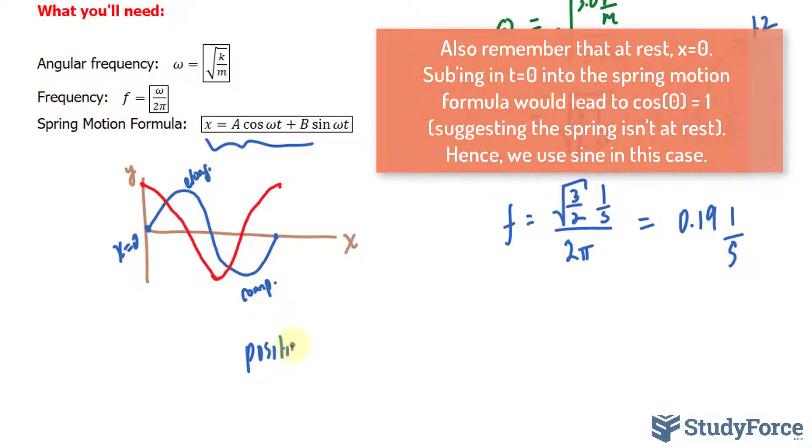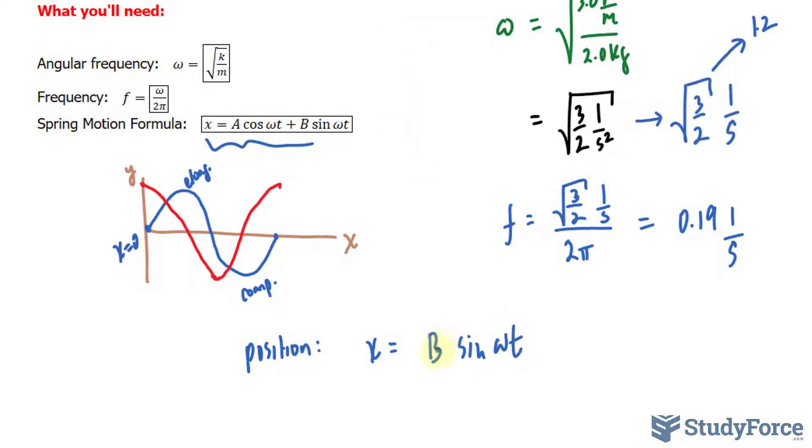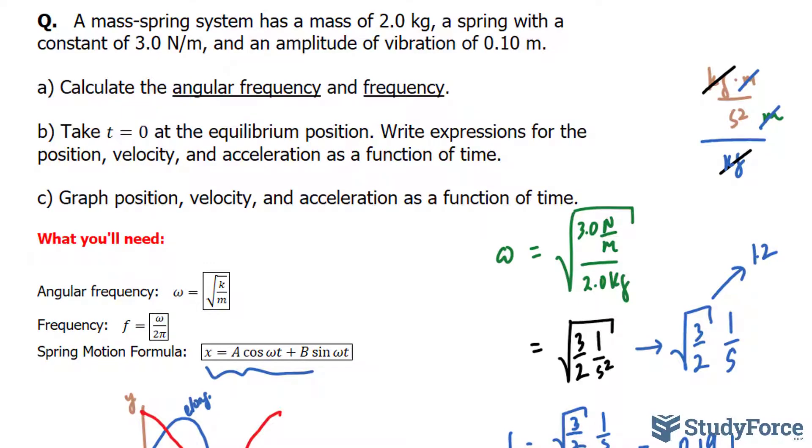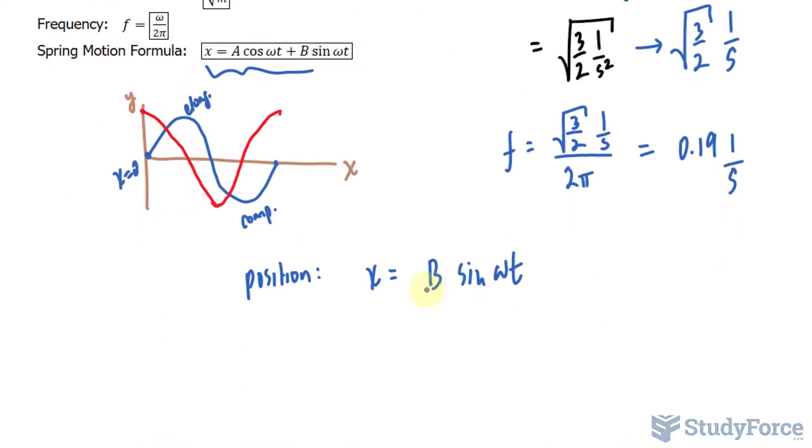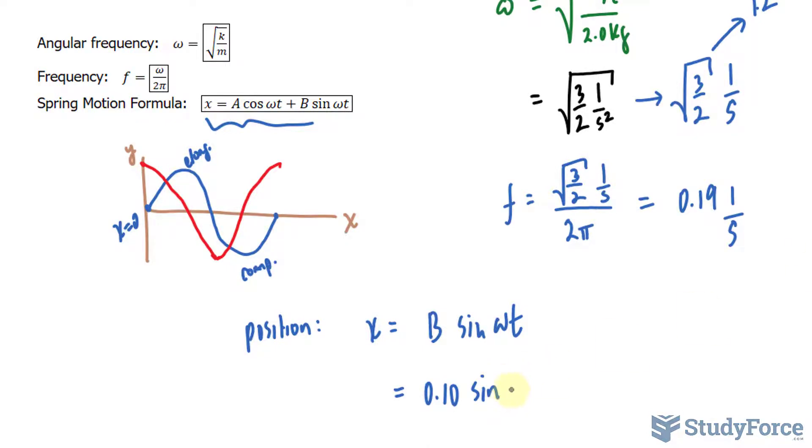So I'll say position x is equal to b sine omega t, where b is the amplitude, omega is what we found earlier, and t represents the time. All we have to do is substitute some of these values into that formula, where the amplitude being 0.10, sine, and omega being 1.2 or the square root of 3 over 2, times t.